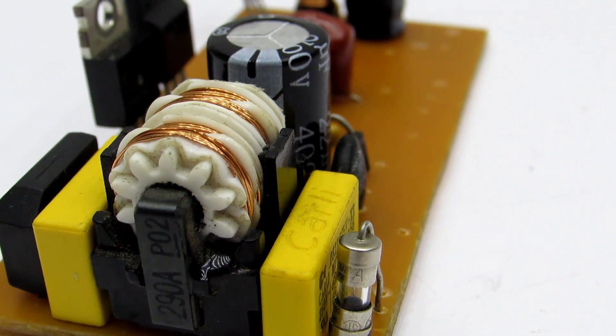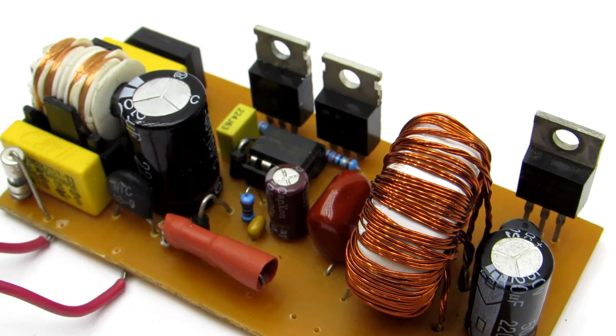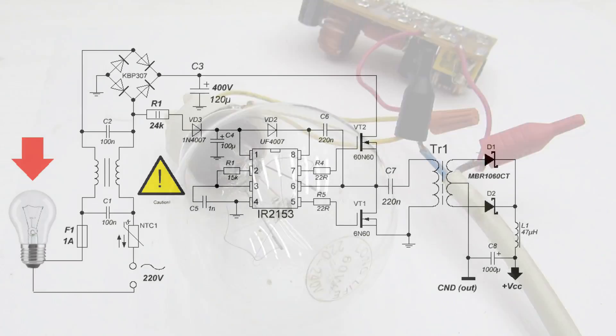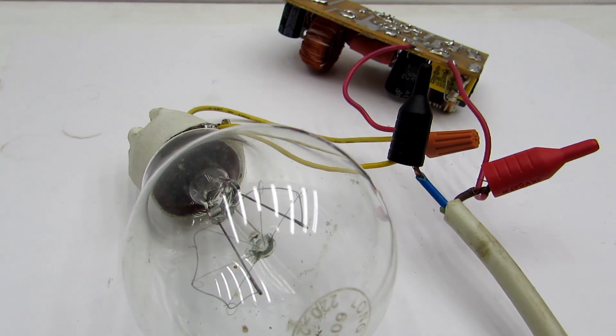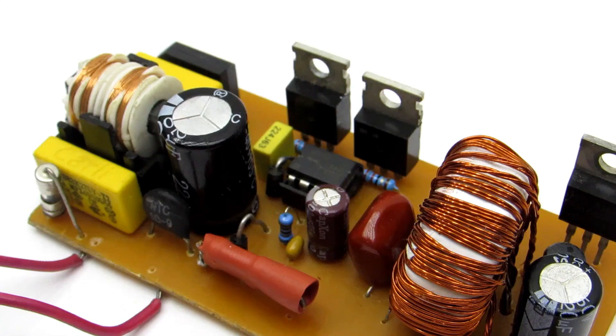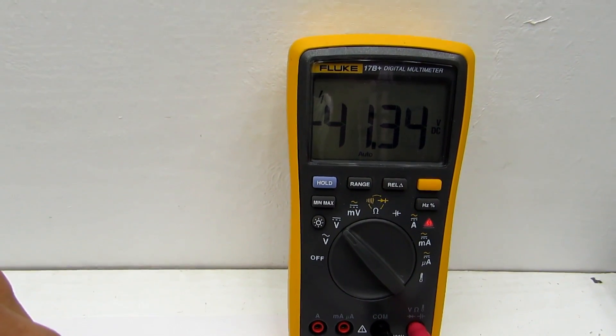A properly assembled unit will work immediately. All components are also recommended to check out before installation, even if they are new. First start, of course, should be done with a safety bulb of 40 to 60 watts. It should blink quickly in the moment of switching on. This means that the capacitor is charged. Now check the voltage at the output. I can say that everything is within the desired range.